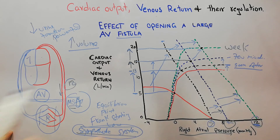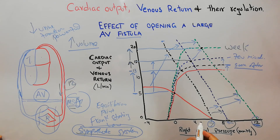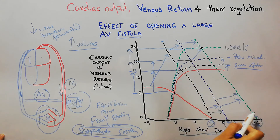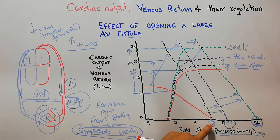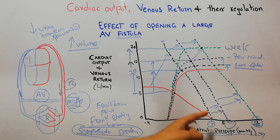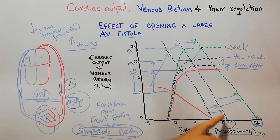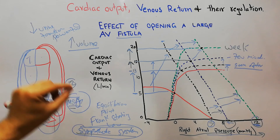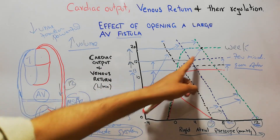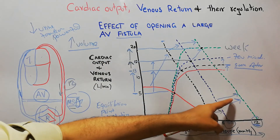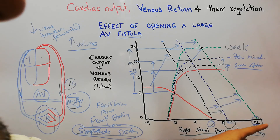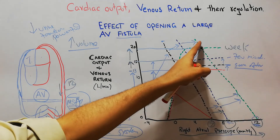The new mean systemic filling pressure has increased to around 12 mmHg. So the right atrial pressure now has to increase to 12 mmHg to bring this new venous return to zero level. In the normal heart the right atrial pressure only had to increase to 7 mmHg to bring venous return to zero. After a few weeks of opening the large AV fistula, with the increased blood volume, sympathetic stimulation, and more powerful heart, cardiac output and venous return have increased substantially.